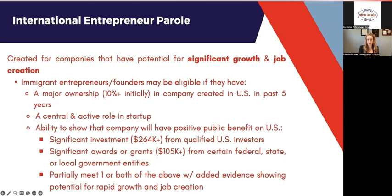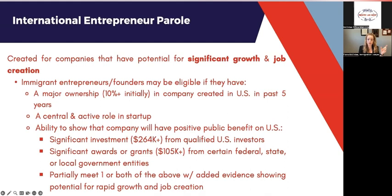They must also have a central and active role in the startup. We've consulted with people who had an investment and ownership share but were more like a silent partner and weren't actively participating — it's for people who are actively participating in the running of the company. We must show that the company is going to have a positive benefit on the US. This is really for companies that have received funding in the US — from qualified investors, with a threshold of $264,000, or awards or grants from government entities, or potentially a mixture of both.